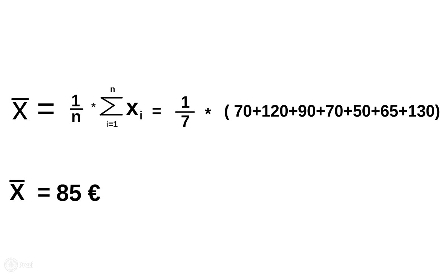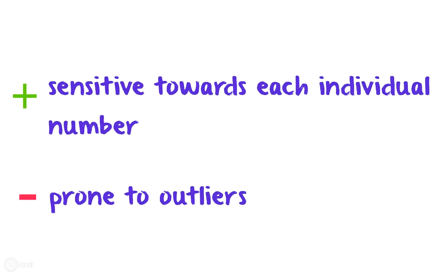A big advantage of the mean is that it is sensitive towards each individual number in the set, meaning each individual price is directly considered during the calculation. On the other hand, a big disadvantage of the mean is that it is very prone to so-called outliers. For example, if the merchant offers an additional smartphone priced at 300 euros, the mean would enormously increase even though only one smartphone is significantly more expensive, making the mean appear less meaningful.